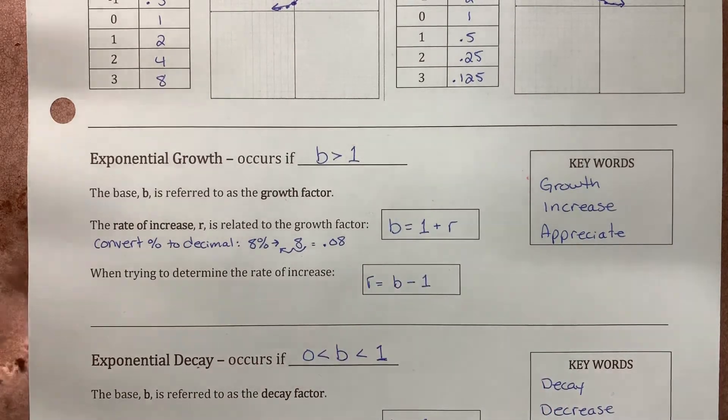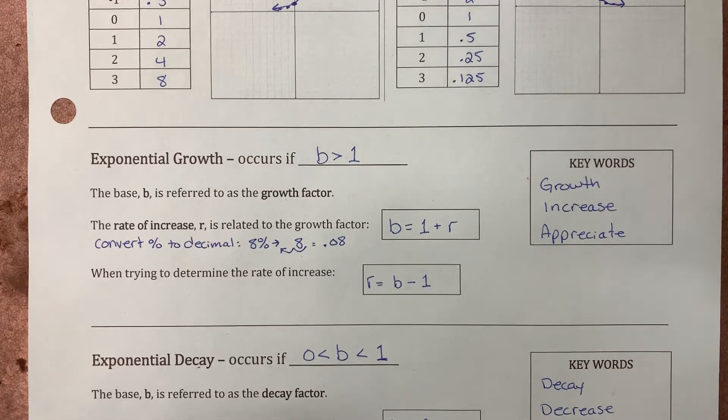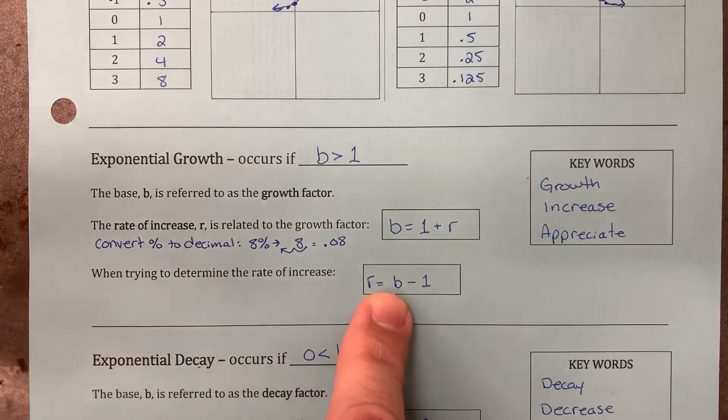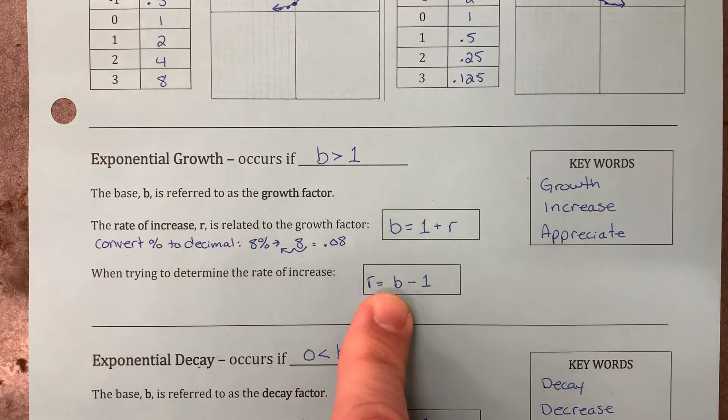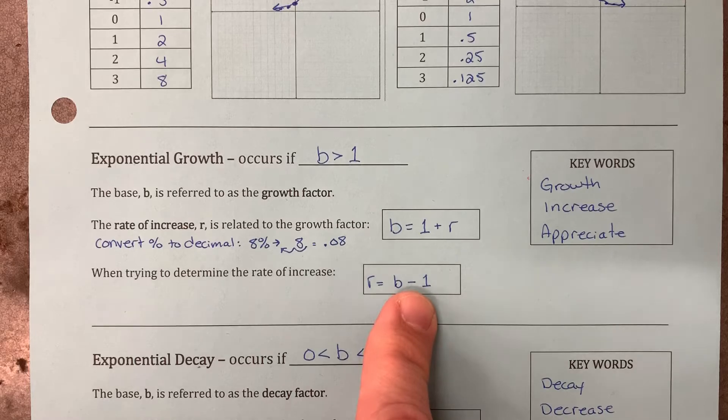Now, if you were trying to, if you were given an equation, and you were trying to figure out what was the rate of growth, then you would simply say whatever the b value was given to you, maybe in this case, 1.08. Subtract it from 1, and you would get 0.08. And then you would just convert that back to a percentage by bumping the decimal two places back to the right.